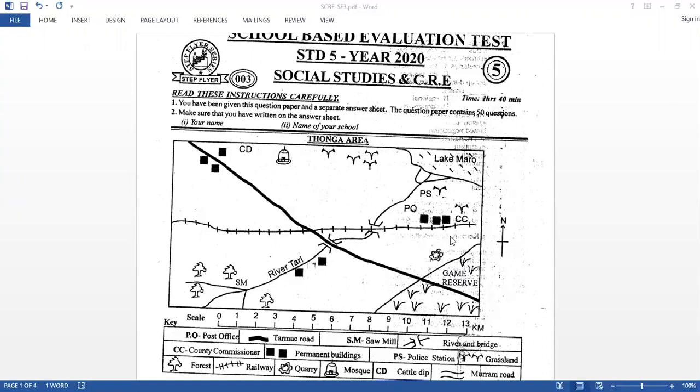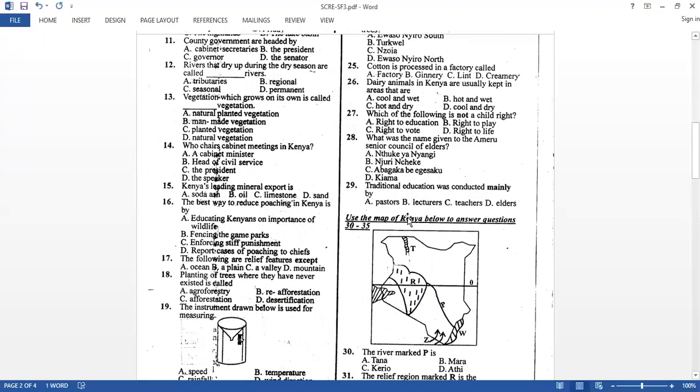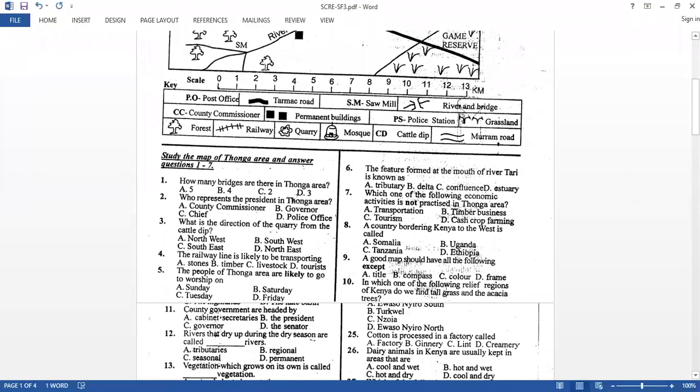Game reserve meaning maybe there is tourism in the area. Then this one is a quarry. Mining also is practiced in the area. And if you see these forests here, and then you have a sawmill, it means that there is lumbering also, which forms part of the economic activity that you can practice in the area. So as we continue learning more about this map, PO post office, then this is county commissioner. You have permanent buildings, mosques. It means that the religion being practiced in the area is Islam. Many people in this area maybe are Muslims.